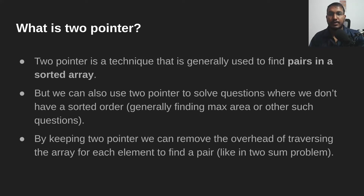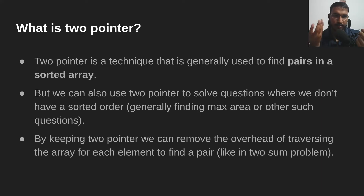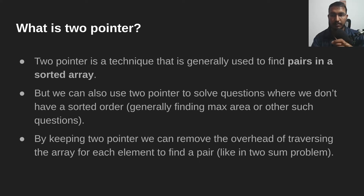The actual benefit of two pointers is this: generally, when we have to find a pair — say two elements where the sum equals some target — what we do is for each element we traverse all the remaining elements, which increases time complexity to O(n²). But if the array is sorted, then it becomes quite easy to solve, because we know the smallest element is on the left and the largest is on the right. We can start with two pointers and either decrease or increase them based on the value of the sum.